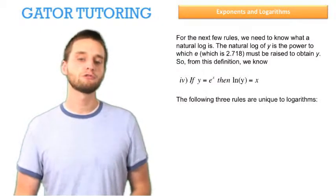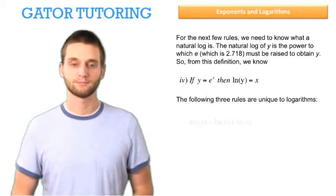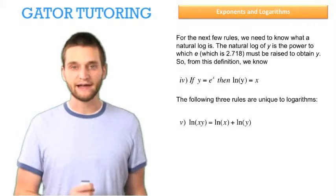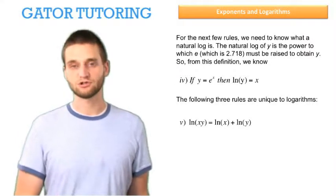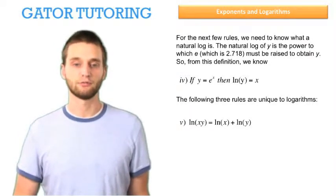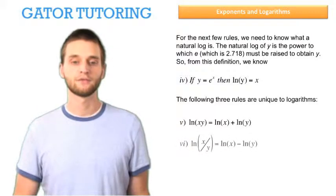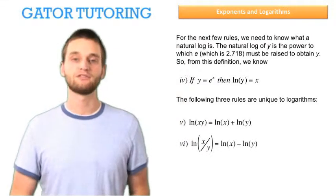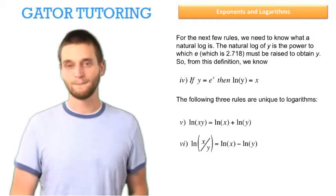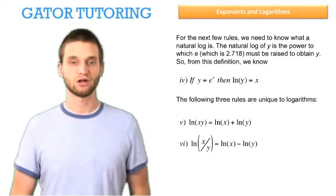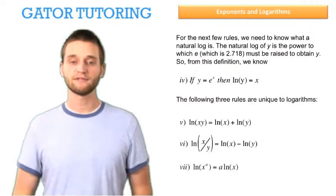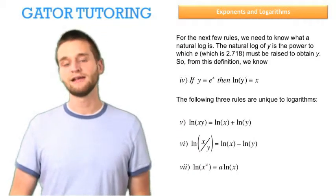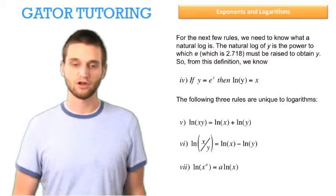The following three rules are unique to logarithms. Number 5: the natural log of x times y equals the natural log of x plus the natural log of y. Number 6: the natural log of x divided by y is equal to the natural log of x minus the natural log of y. Number 7: the natural log of x raised to the a is equal to a times the natural log of x.